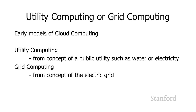In order to understand how the traditional model differs from cloud computing, I'm going to look at two closely related early models: utility computing and grid computing. You can view this as a vision of the future of where things are headed, and most of the things we're going to see in these models are available now.